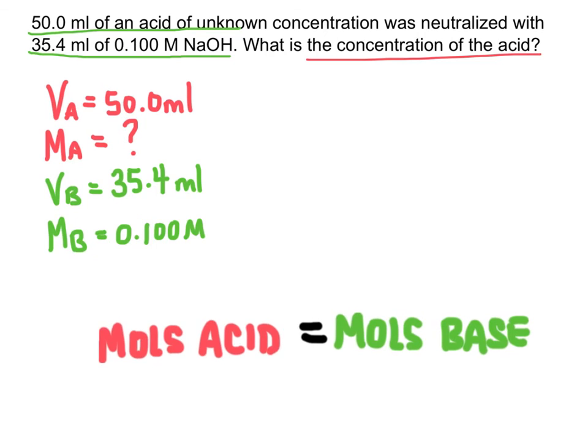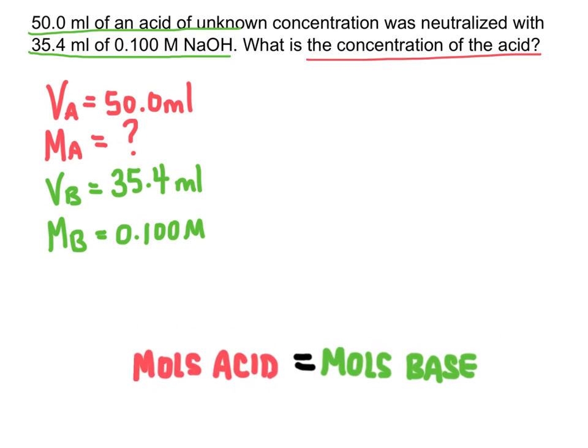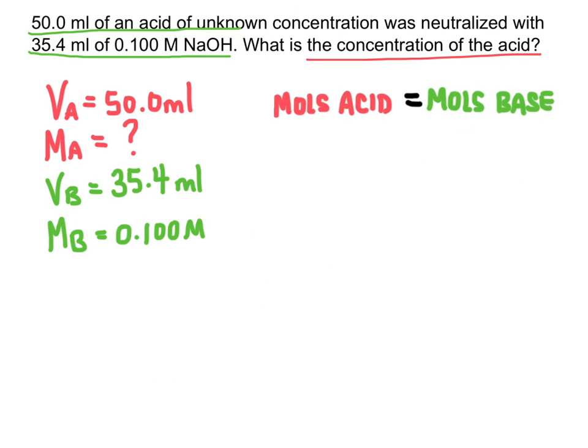So there's a couple ways we could solve a titration problem. I like to use something called the titration equation. Essentially, this equation right here, I'm just going to modify it to include the variables that I am given in this problem. So anytime you have concentration and volume of a solution, if you multiply them together, you're going to get the number of moles in that solution. So I can change this equation right here.